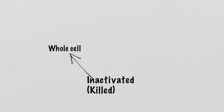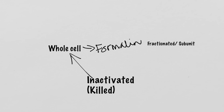Let's now move to the inactivated or killed vaccines. Inactivated vaccines are produced by growing the bacterium or virus in culture media, then inactivating it with heat or chemicals. This process can be done with a whole cell, like a whole bacterium or virion, and typically a chemical known as formalin is used to inactivate it. But there are other methods for fixing or chemically inactivating them. Remember that these inactivated vaccines are not alive and cannot replicate. In addition to inactivated whole cell vaccines, there are fractionated or subunit vaccines, where the vaccine will only contain the portion of the microorganism that actually elicits an immune response.